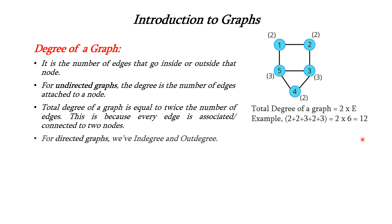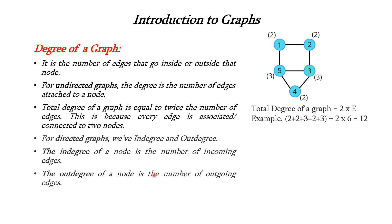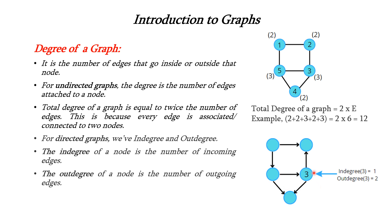For directed graph we have two types of degrees: in-degree and out-degree. In-degree is the number of incoming edges and out-degree is the number of outgoing edges. For node 3, the number of edges coming into node 3 is only 1, so in-degree of 3 is equal to 1. Out-degree of 3 means how many lines are going out of 3 — we have 2 lines, so out-degree of 3 is equal to 2.